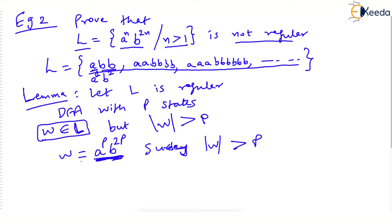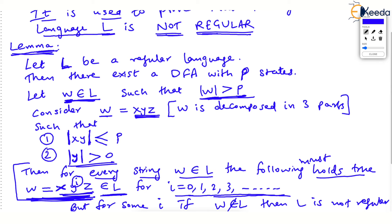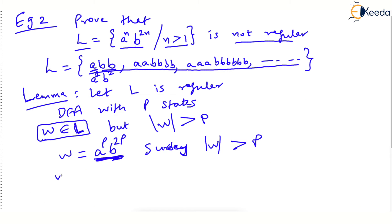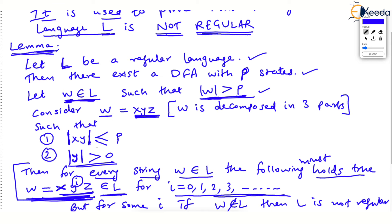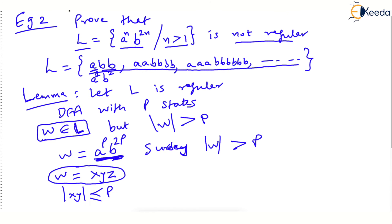We have selected one word which is part of L. Rechecking the lemma: we assume L is regular, hence a DFA with p states exists. We have taken the word a^p b^{2p} and its length is greater than p. Now we have to break this word into three parts x, y, and z. There are some conditions: the length of x and y taken together should be less than or equal to p. Note: I made a mistake in one of the earlier videos writing this as greater than or equal to p — it is less than or equal to p, and I corrected it in that video itself.